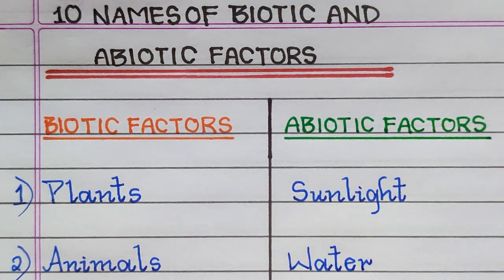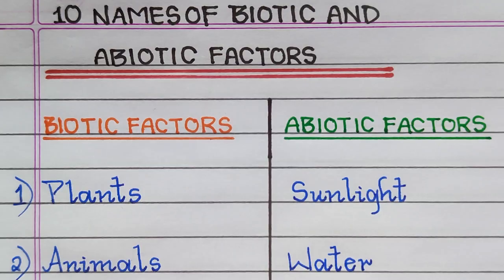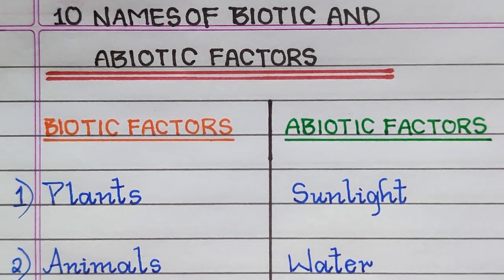The first two examples of biotic factors are plants and animals. The first two examples of abiotic factors are sunlight and water.